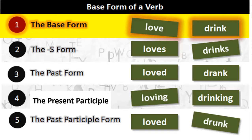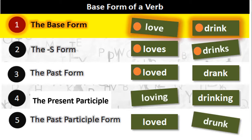Let us look at what we have learnt today using two examples — 'love' and 'drink.' The base forms are 'love' and 'drink.' The S form: 'loves' and 'drinks.' Simple past: 'loved' and 'drank' — note that 'drink' is a little irregular here. Present participle: 'loving' and 'drinking.' Past participle: 'loved' and 'drunk.' So all five forms we talked about in the lesson today.